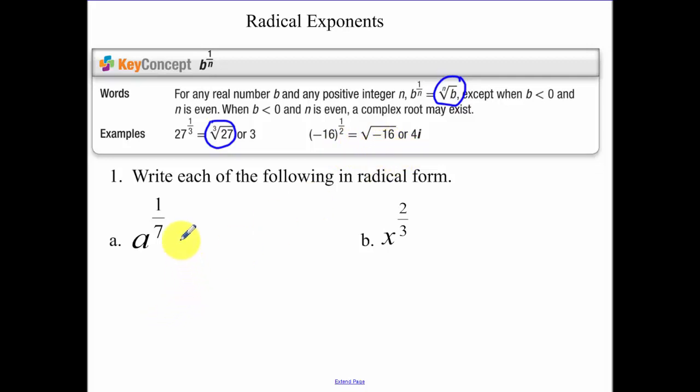So writing each in radical form. How I always remember it, this number on the bottom is what your radical is or your index. So that's 7th root of a to the 1st power or just a.